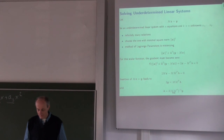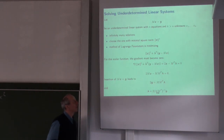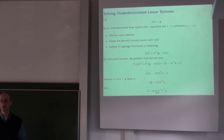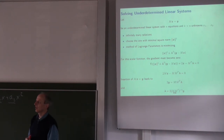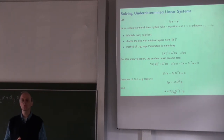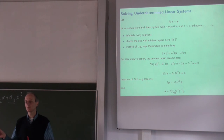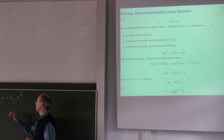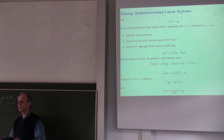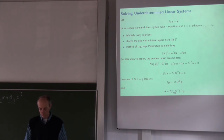It may seem arbitrary to use the Euclidean norm here. It is possible to use a different norm, for example the L1 norm, where you take the sum of absolute values instead of squared values. Using the L1 norm would lead to a solution where individual parameters may be exactly zero.